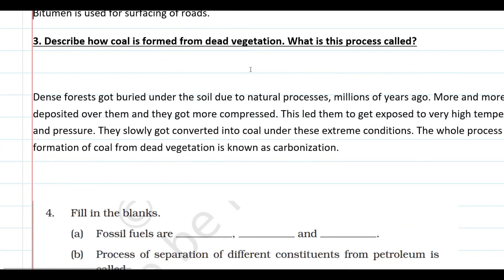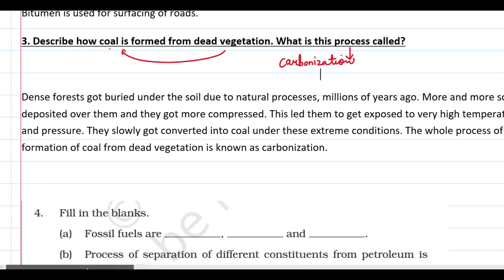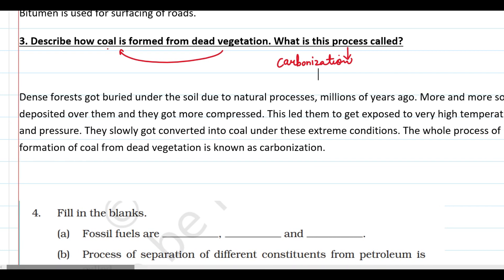Describe how coal is formed from dead vegetation — what is this process called? This chapter covers this in detail. The process by which coal is formed from dead vegetation is called carbonization. Dense forests got buried under the soil due to natural processes — this happened not recently but millions of years ago.